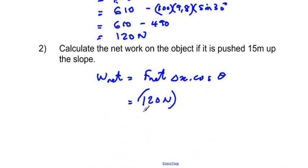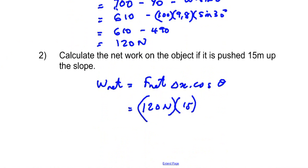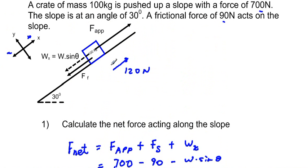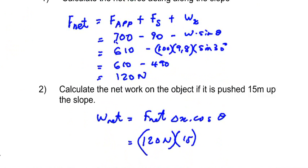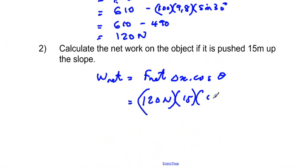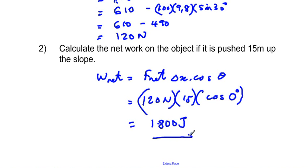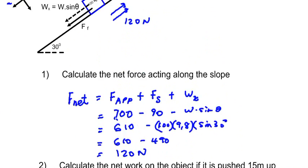Net work = 120 newtons × 15 meters. The box is going up the slope and the force is also directed up the slope, so they are in the same direction, giving cos(0°) = 1. Therefore, W_net = 120 × 15 × 1 = 1800 joules. That is the net work used in moving the object 15 meters up the slope.